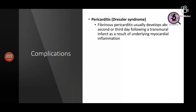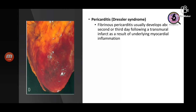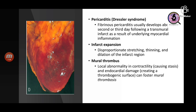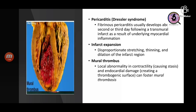Fibrinous pericarditis develops following a transmural infarct because of underlying inflammation. The infarct may expand due to disproportionate stretching, thinning, and dilatation of the infarct region. There may be mural thrombus formation — when contractility of the ventricle is lost, blood accumulates inside the chambers causing stasis, endocardial damage may occur, and this can foster mural thrombus formation.